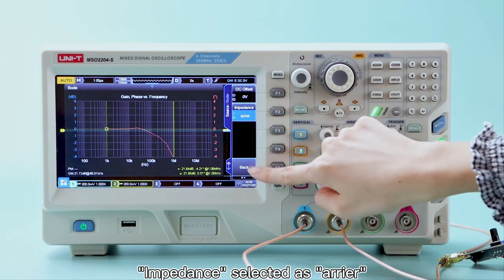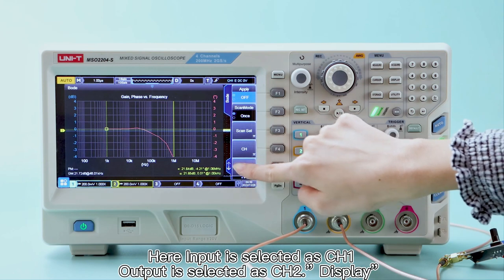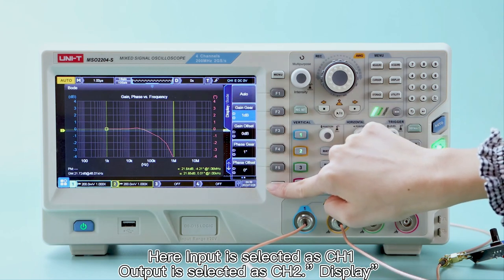Impedance selected as Area. CH Channel Setting - here input is selected as CH1, output is selected as CH2 display.